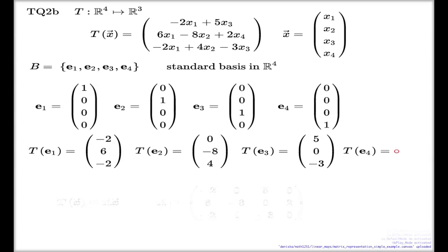And final value, T of e4. Now I use these components. No e4 in the first component, so it is zero. You've got plus 2 here and again zero for the last component because it doesn't carry any x4. So here will be zero, 2, zero.